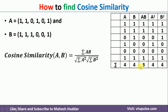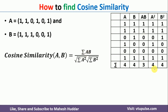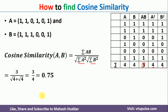Now I will put all these values into the equation. The summation of AB is equal to 3. The summation of A squared is equal to 4, and the summation of B squared is equal to 4. Once you put these values in, 3 divided by the square root of 4 — which equals 2 — multiplied by 2 gives 4. The final answer is 0.75.